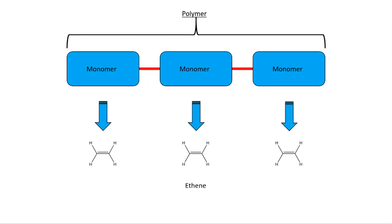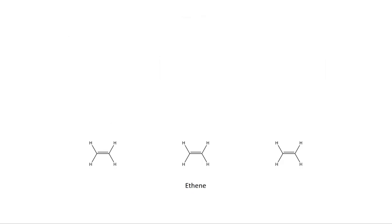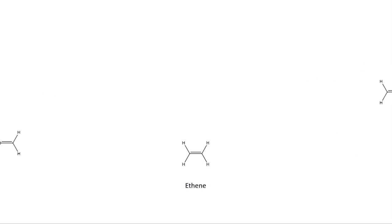There are lots of ways to make polymers, but let's look at chain growth reactions to see how polyethene is made. First of all, the monomers are just floating around. They need initiators to start reacting, such as benzoyl peroxide.